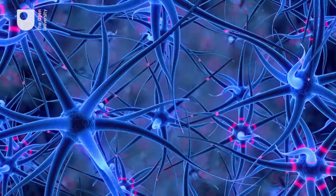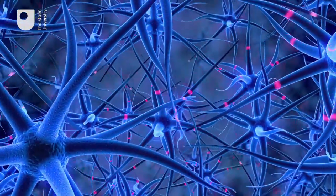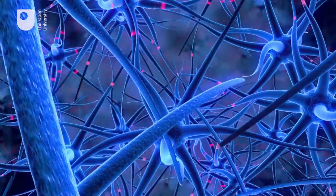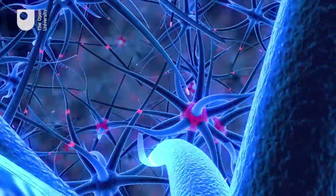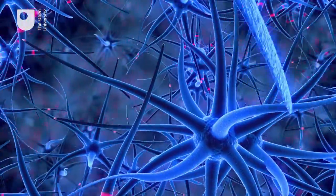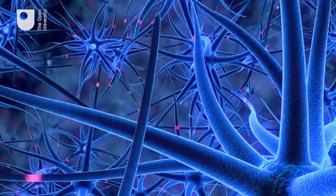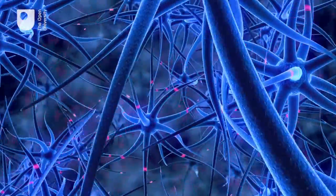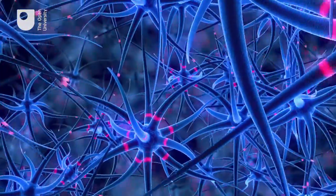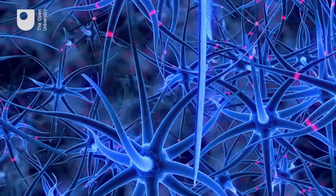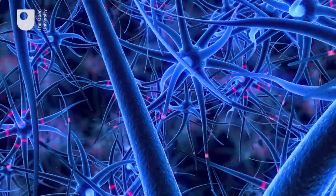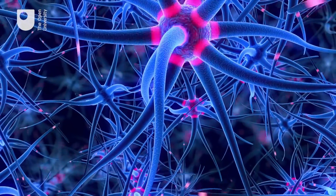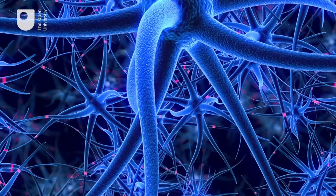To get to the brain, alcohol has to cross the blood-brain barrier. This is a protective cell layer that sits between your blood vessels and the brain tissue, but once it's crossed this barrier it can start affecting neuronal function. Neurons are the brain cells that send messages, and one of the ways they do this uses chemicals called neurotransmitters.